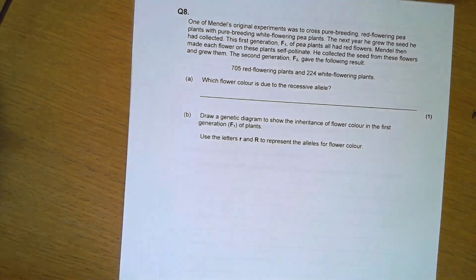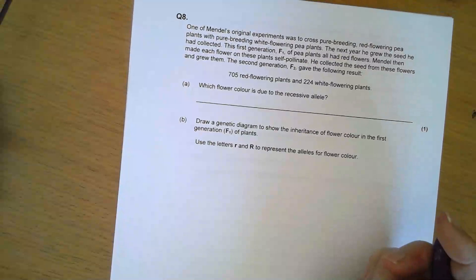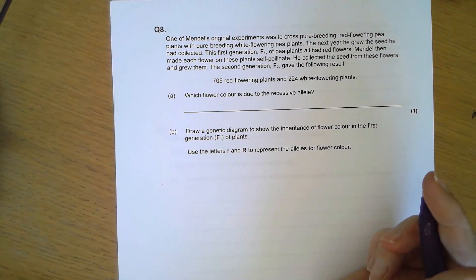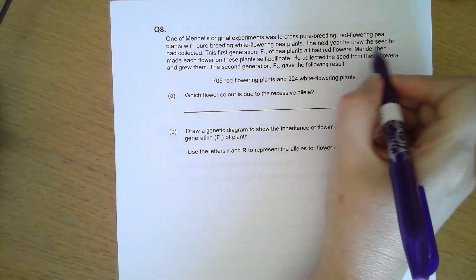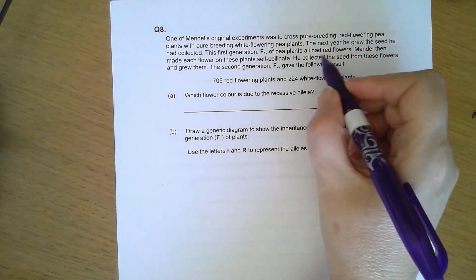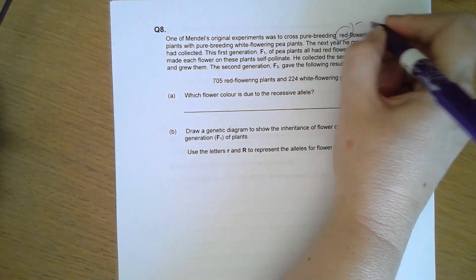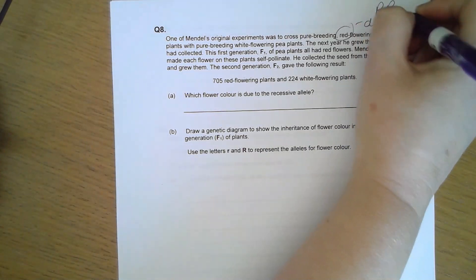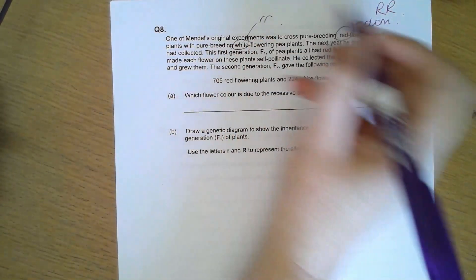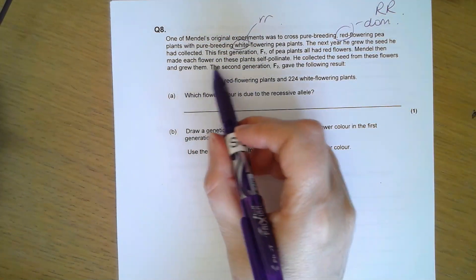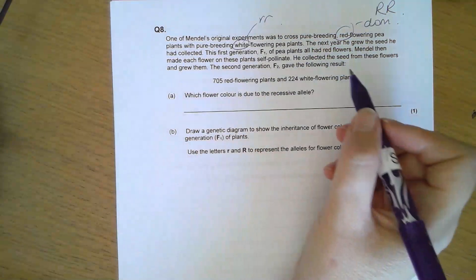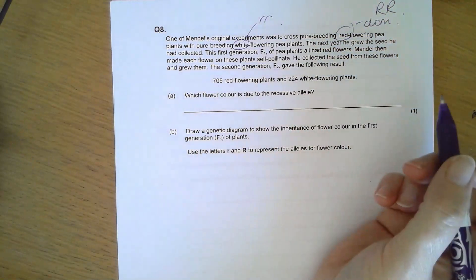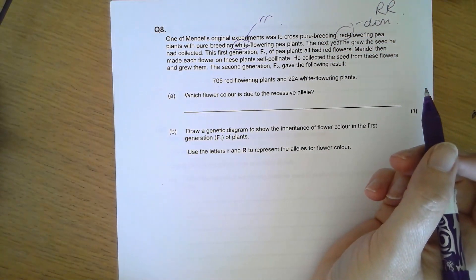Question eight. One of Mendel's original experiments was to cross pure breeding red flowering pea plants with pure breeding white pea plants. The next year he grew the seed. The first generation of pea plants all have red flowers, so red is dominant. So RR pure breeding, and white recessive.